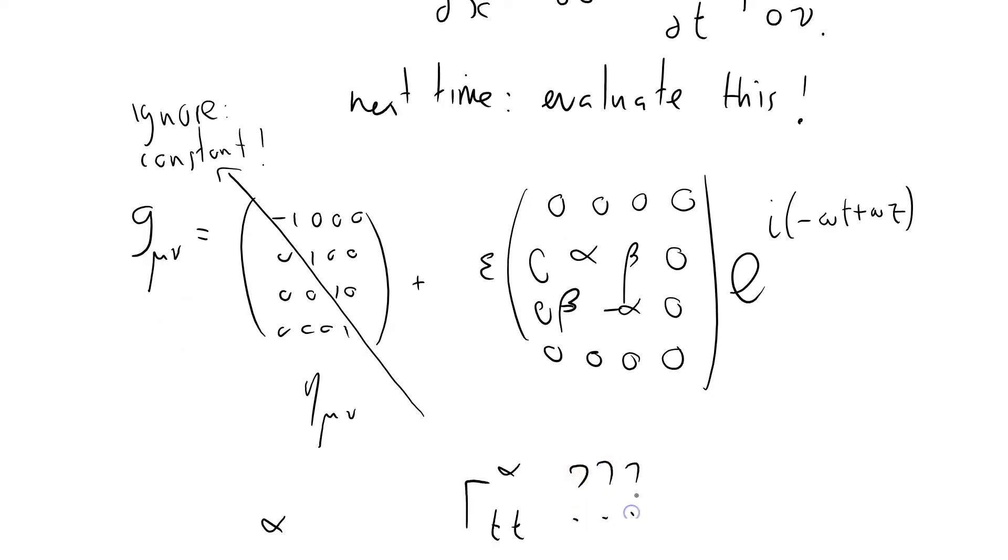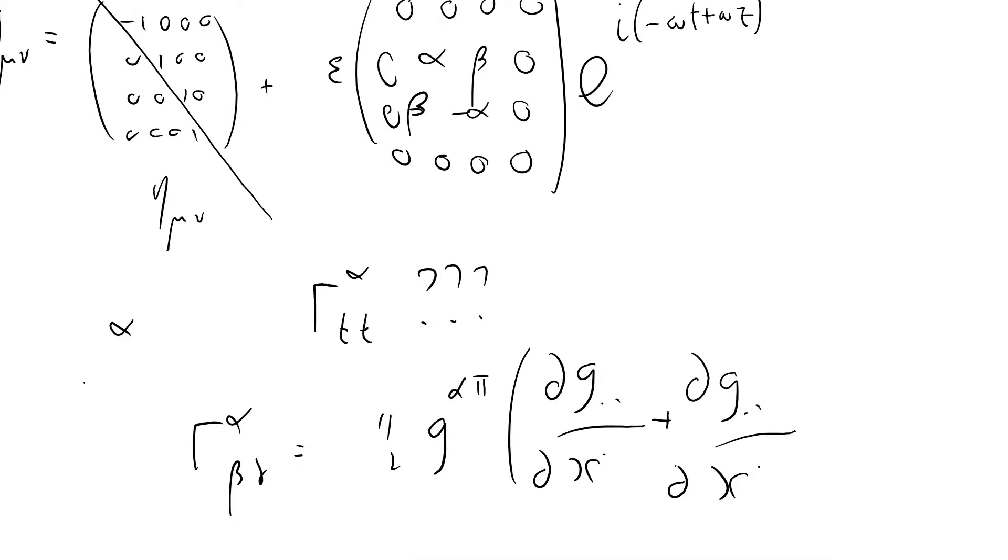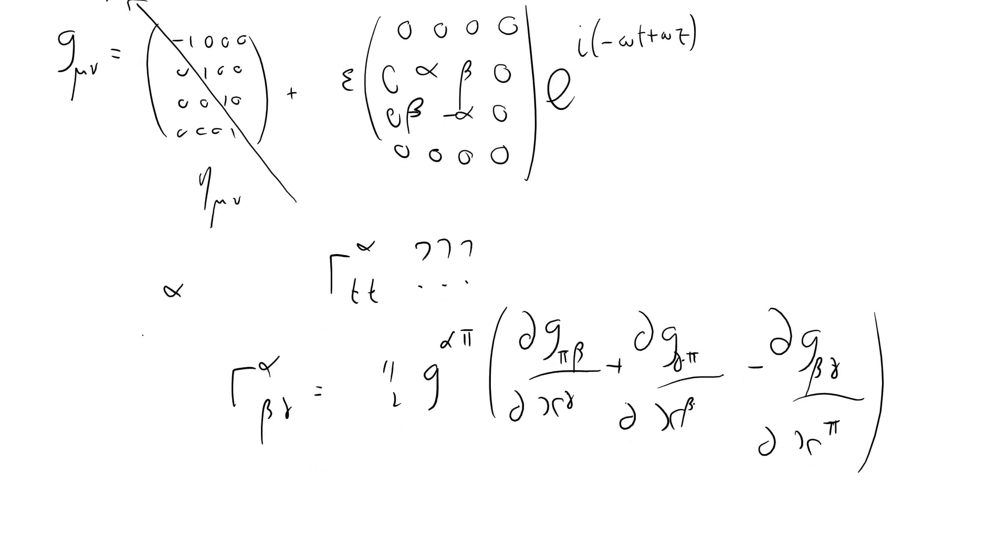So I want to evaluate that. What is this beast here? Well, let's get the definition. Gamma^α_{βγ} equals a half g^{απ} times (∂g_{πγ}/∂x^β + ∂g_{βπ}/∂x^γ - ∂g_{βγ}/∂x^π). Okay, so π goes in the first place, it goes in the second place. We've got a beta and a gamma in different positions.